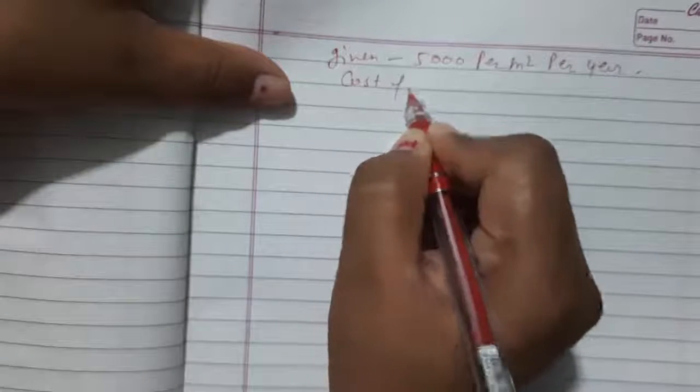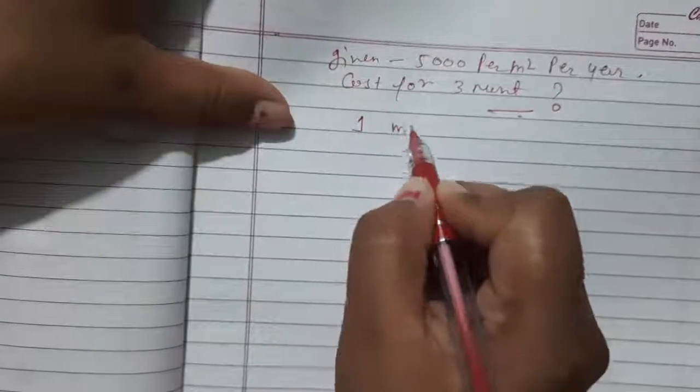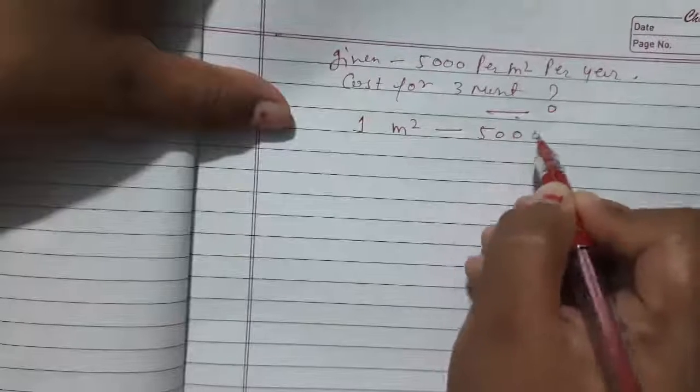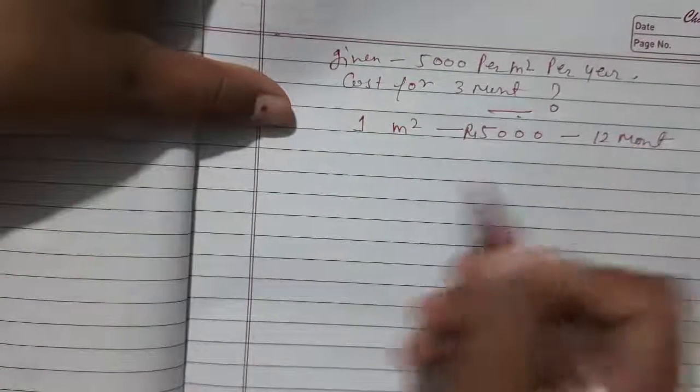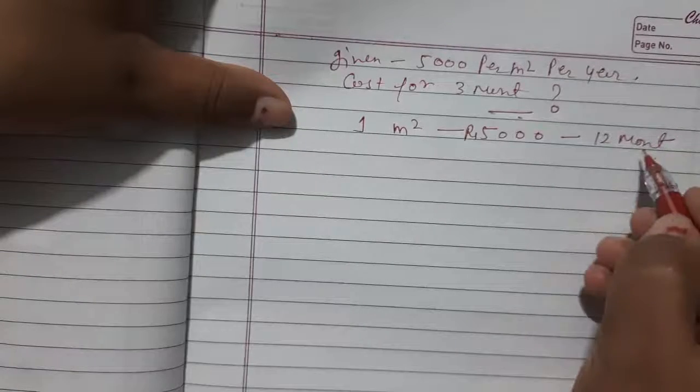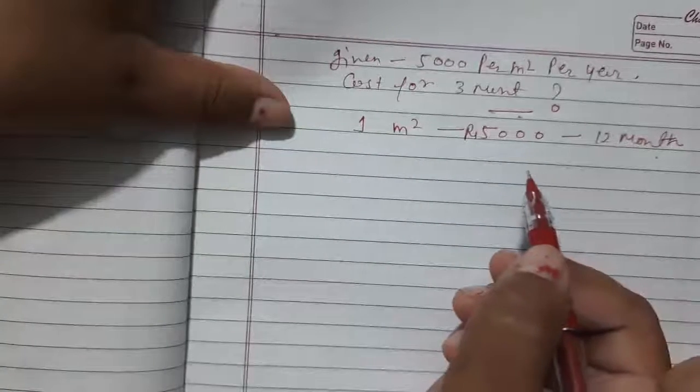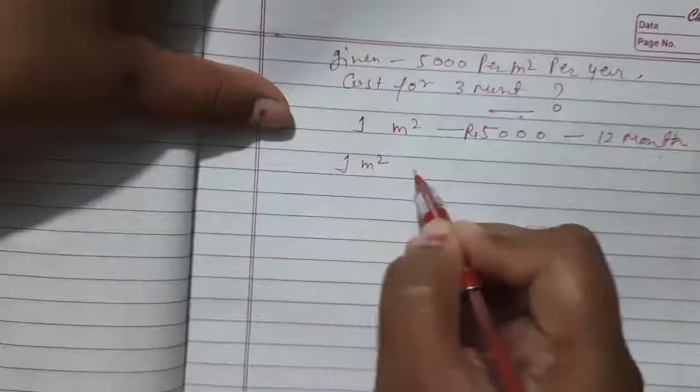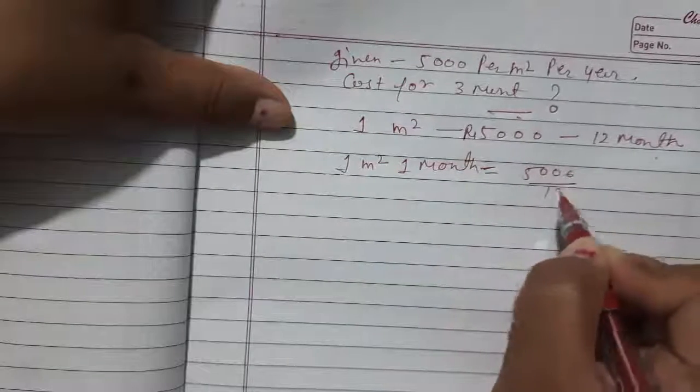As it is given, 5000 per meter square per year, and we have to find our cost for 3 months. So now, 1 meter square costing is rupees 5000 for 12 months. 1 year means 12 months. So we have to find out for 1 month using unitary method: 5000 upon 12 rupees.